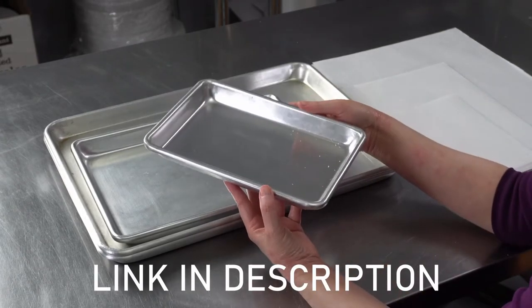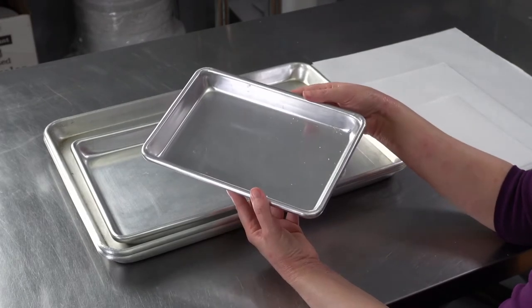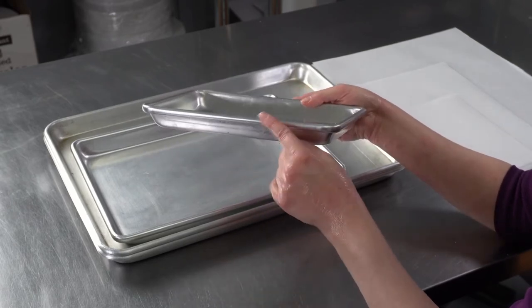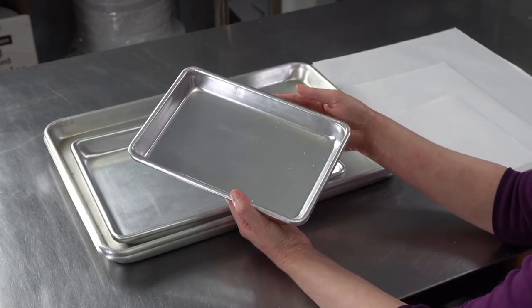So we're looking at these. Some people call them jelly roll pans, some will call them baking trays, doesn't really matter what you call them. They're a nice weight aluminum tray. You can see they have sides and a nice rolled edge on the top, and so there's a couple of reasons that we use these.